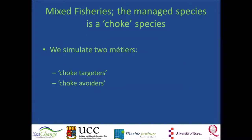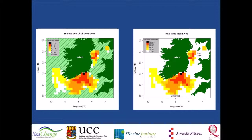Here our simulations come in again. We simulated a mixed fishery where the species managed by RTI is the choke species, with two métiers. Some fishers target the choke species and others target a different species while avoiding the choke species. Choke-targeting fishers mainly go to the red areas where expected daily catches are high but they pay five RTIs per day, exhausting their RTI allocation quickly and having only few fishing days available. Choke-avoiding fishers operate in the yellow and white areas, where abundance of other species may be high and they pay only a fraction of one RTI per day, effectively allowing them to fish almost year-round.